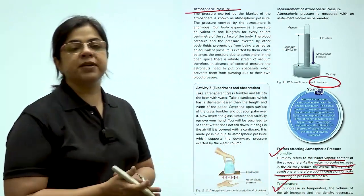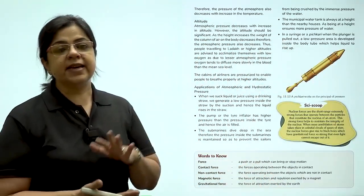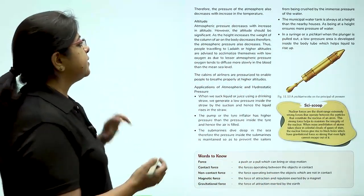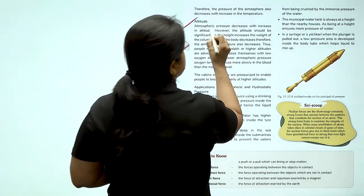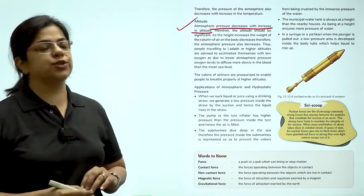The second is temperature. As the temperature increases, the volume of air increases and the density decreases. The third is altitude. Atmospheric pressure decreases with altitude.